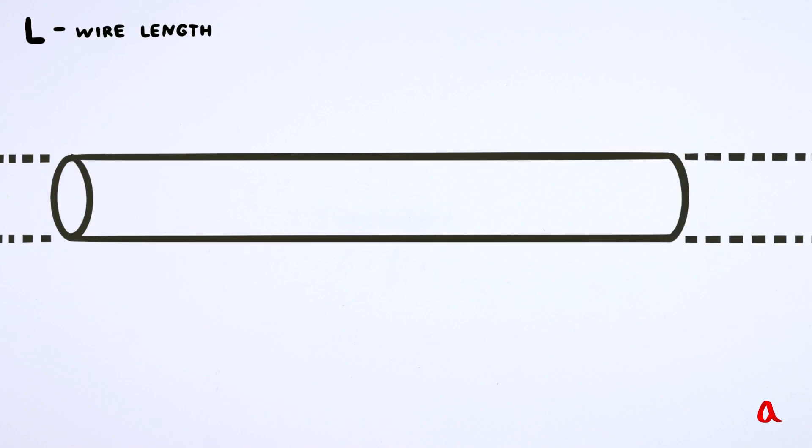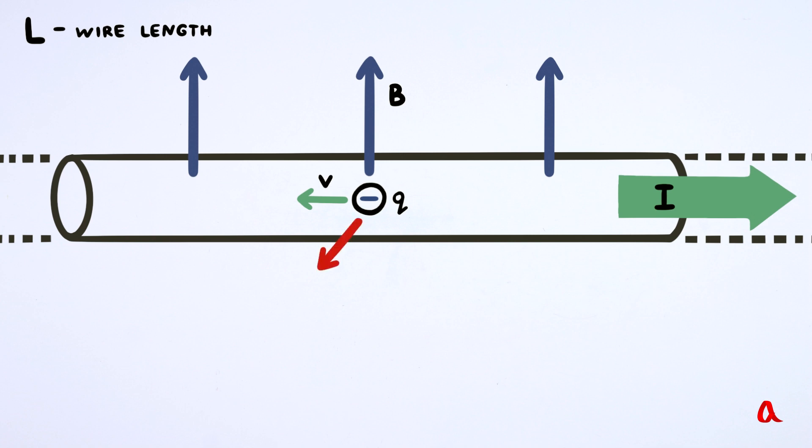Let us consider a piece of wire of length L with current I placed in a magnetic field B perpendicular to this wire. A single charge Q, moving at speed V, is affected by the Lorentz force F, which equals QVB.